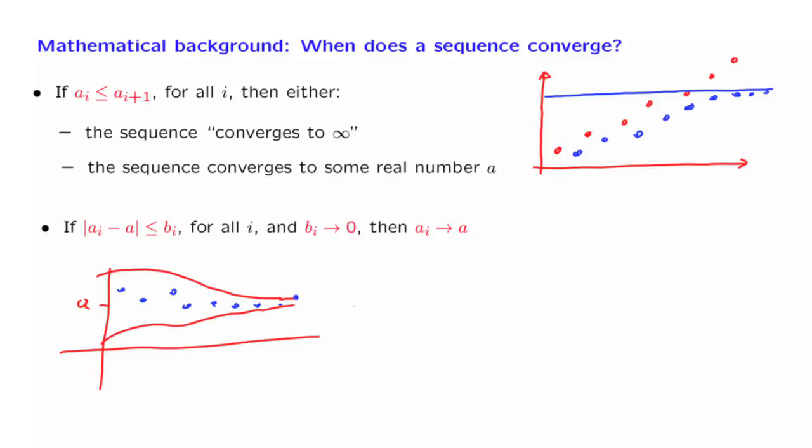So these are the usual ways of quickly saying something about the convergence of a given sequence. And we will be often using this type of argument in this class, but without making a big fuss about them, or without even referring to these facts in an explicit manner.